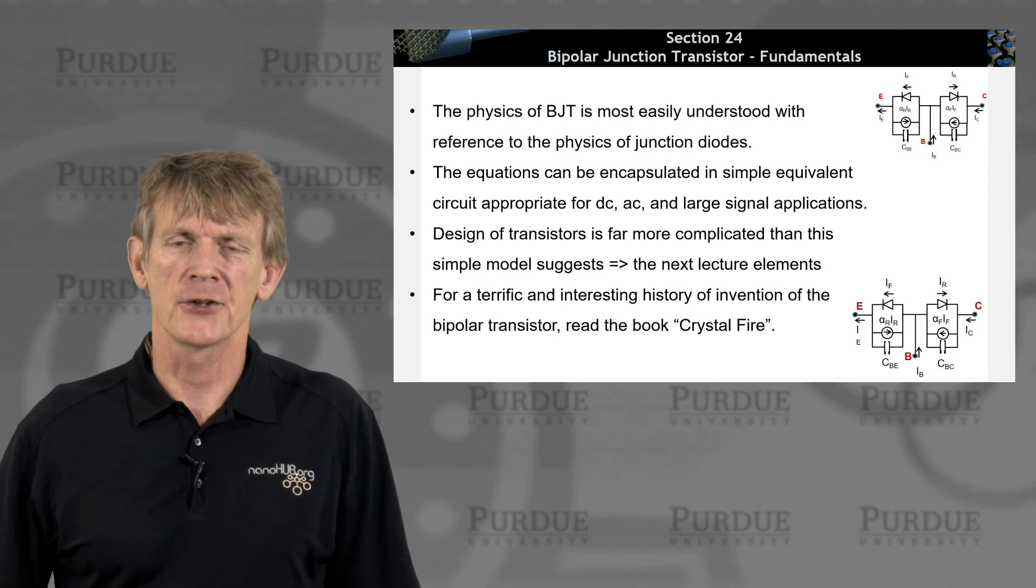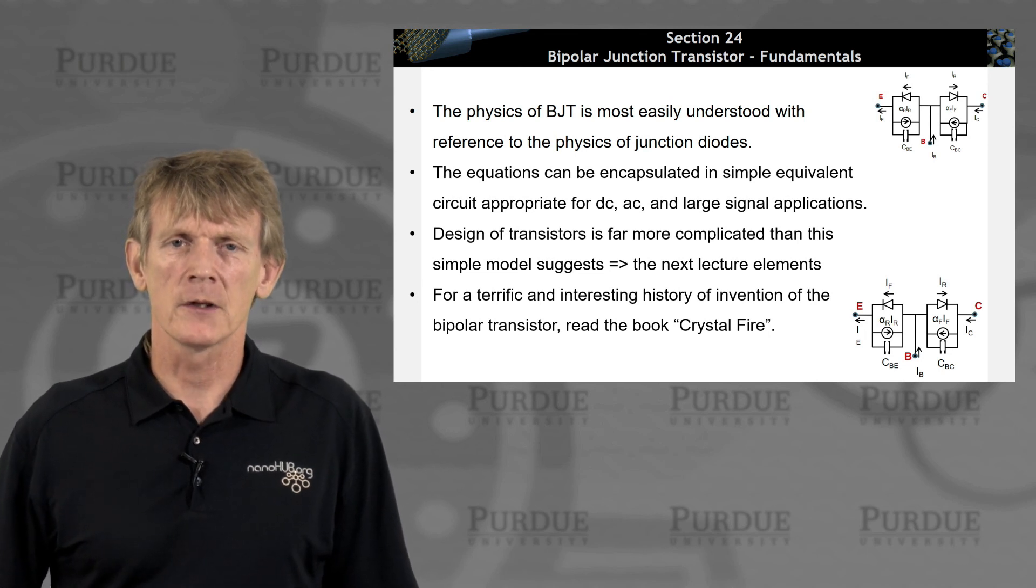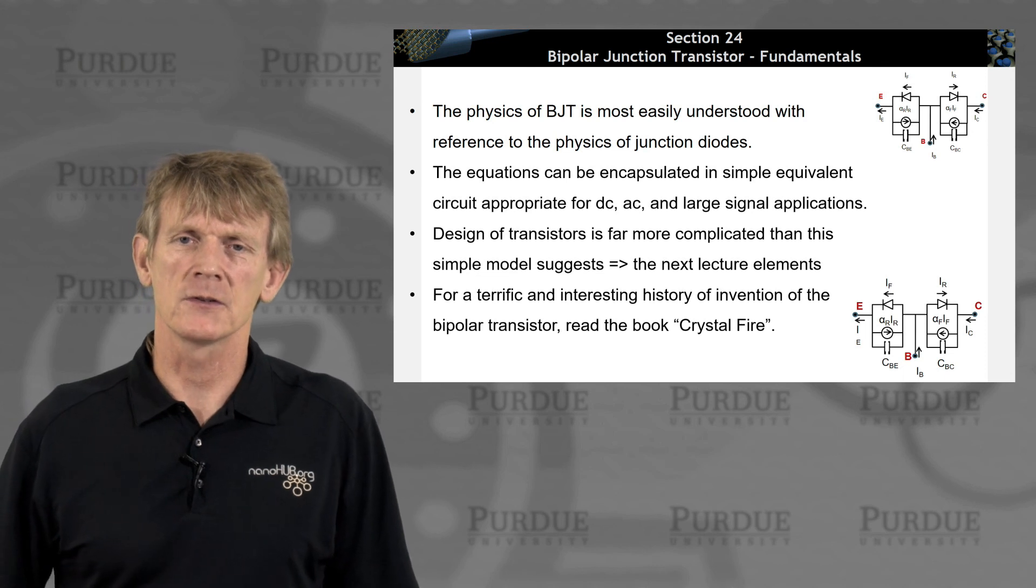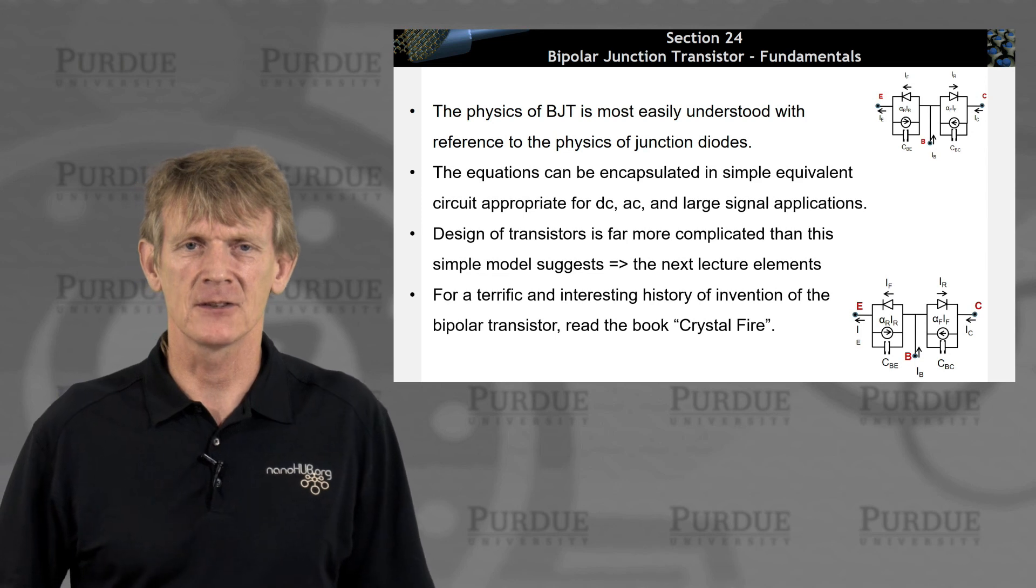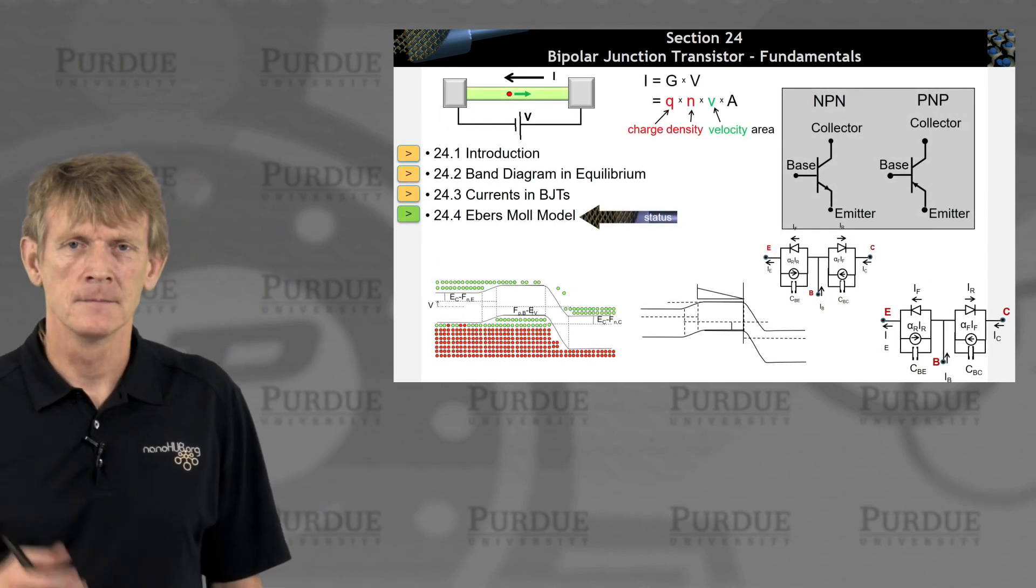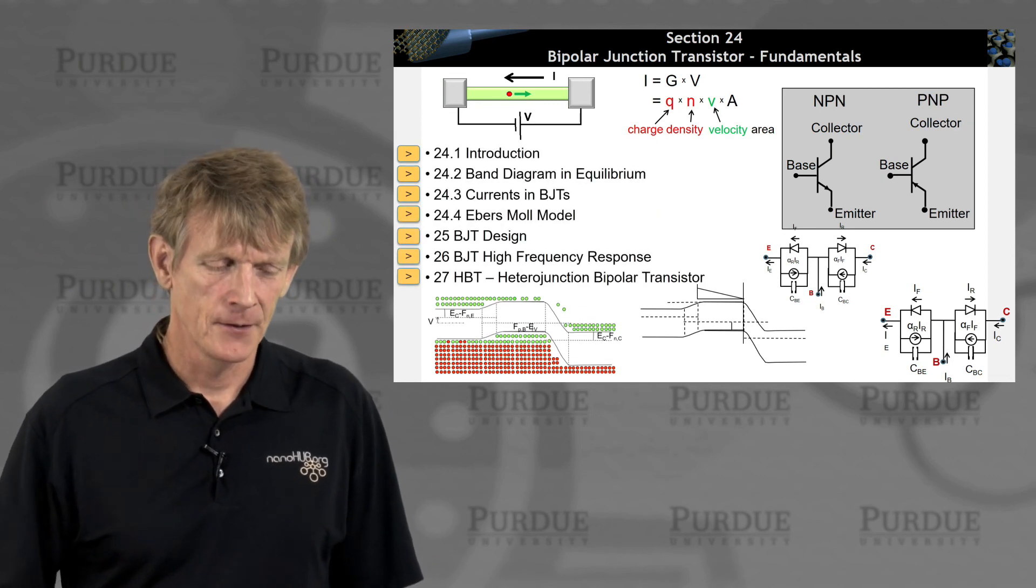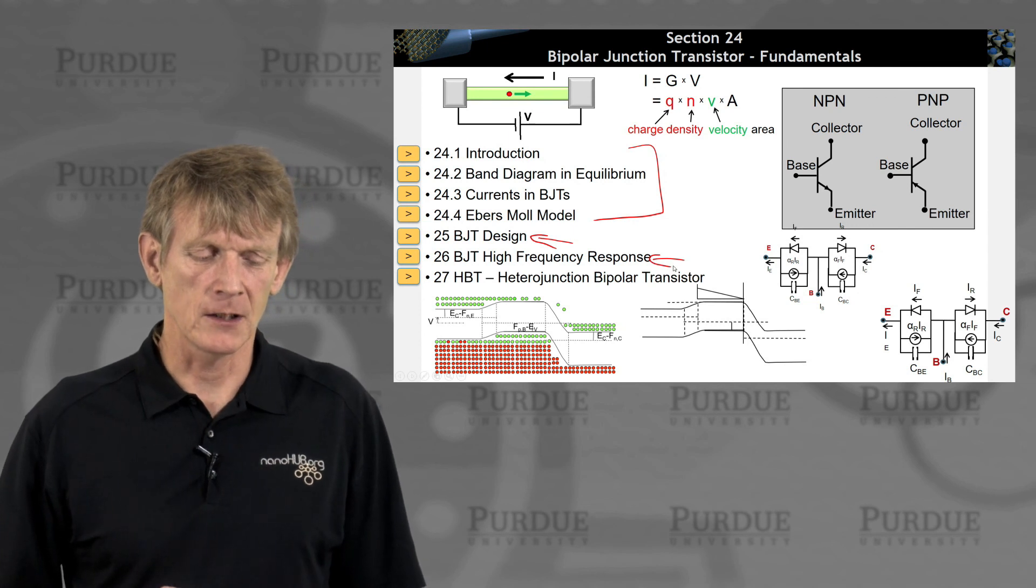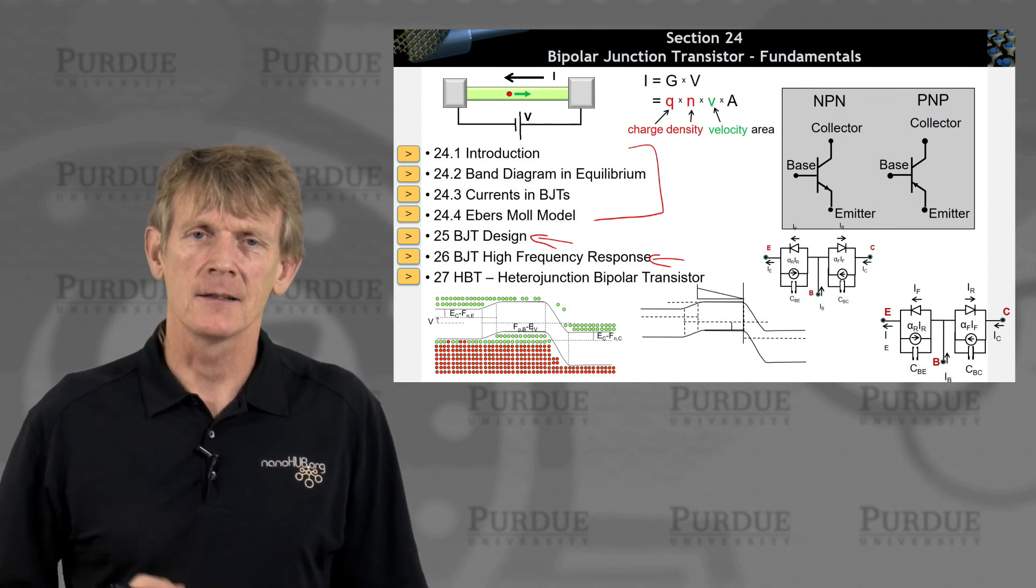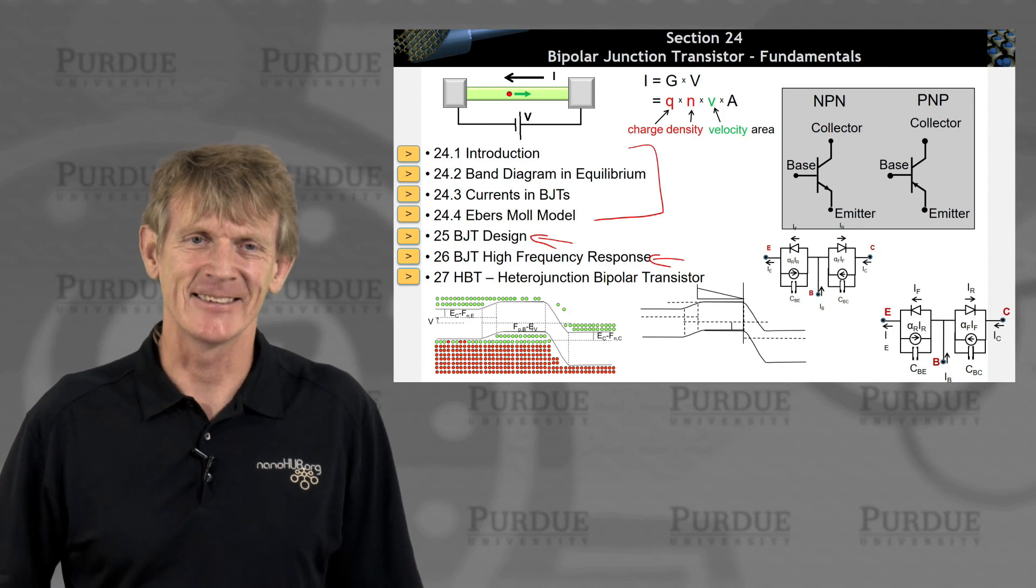And if you are curious about history and technology and the history of technology, there's a cool story about the invention of the bipolar transistor. Read the book Crystal Fire. Other than that, I'll see you in the next section where we begin to discover or discuss some design aspects of a bipolar junction transistor. Okay. That's the summary. And this is what I wanted to say. So we covered these elements here. Now we're going to look at design. We're going to look at, in the next segment after that, high frequency response. And we'll talk about heterojunction bipolar transistors in section 27. So now, I'll see you later. Thanks.